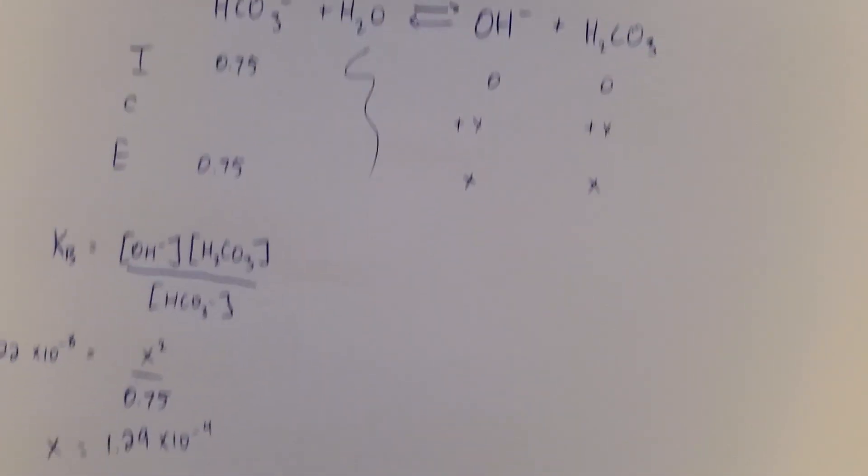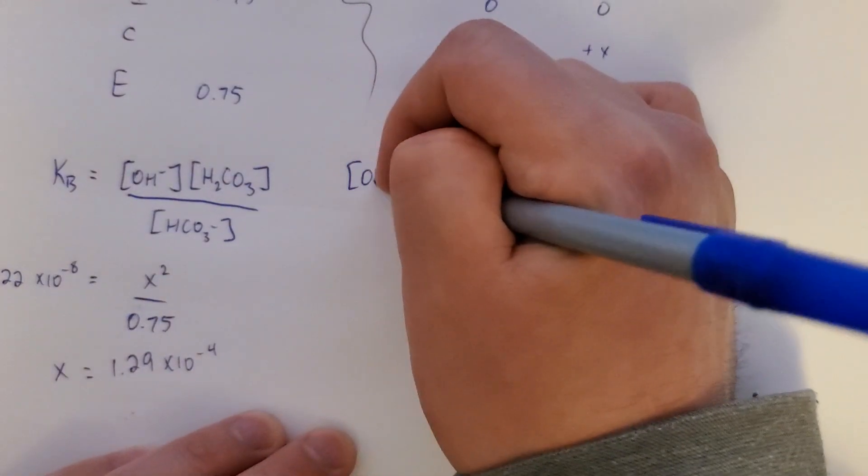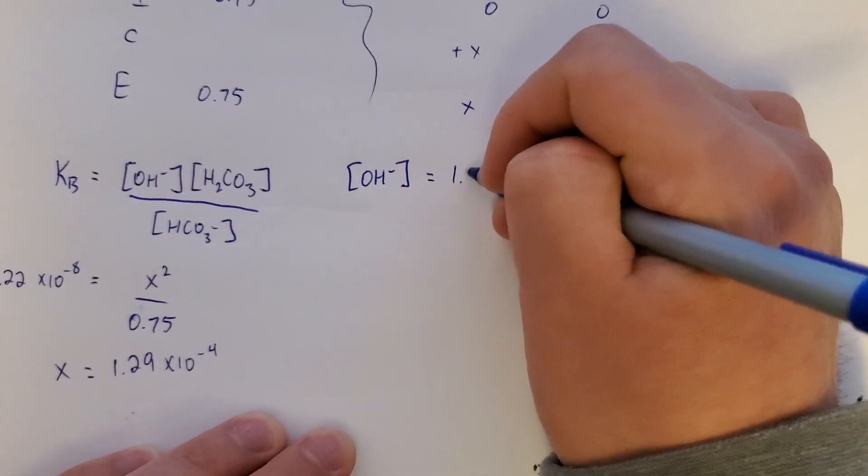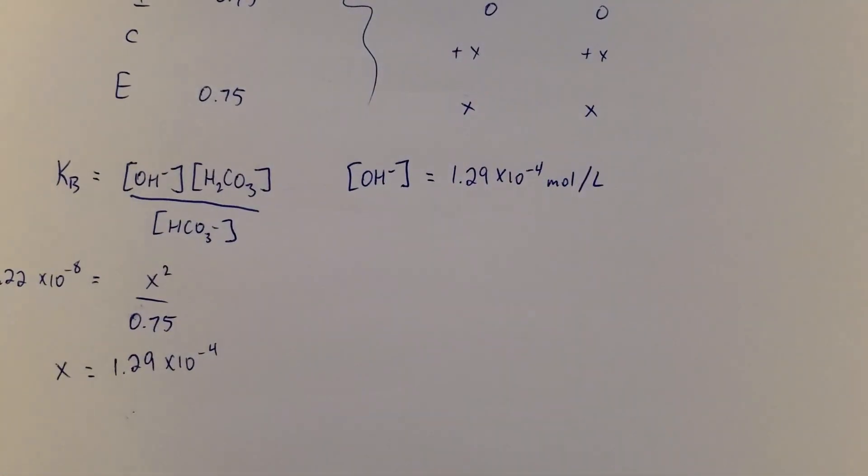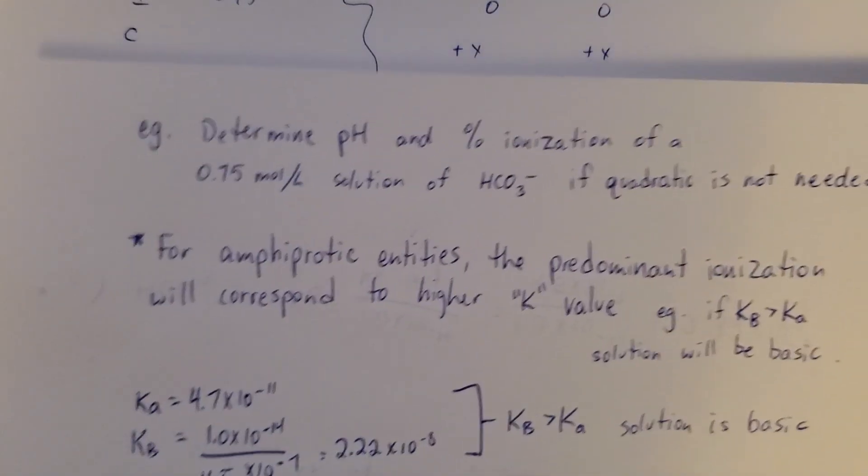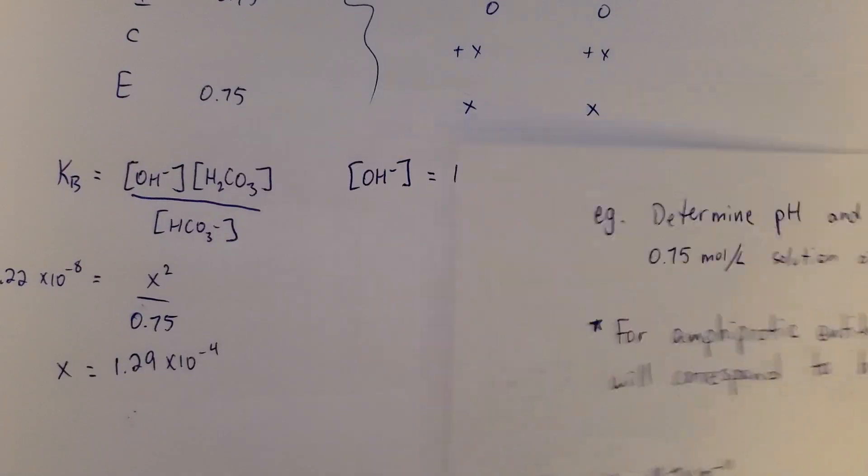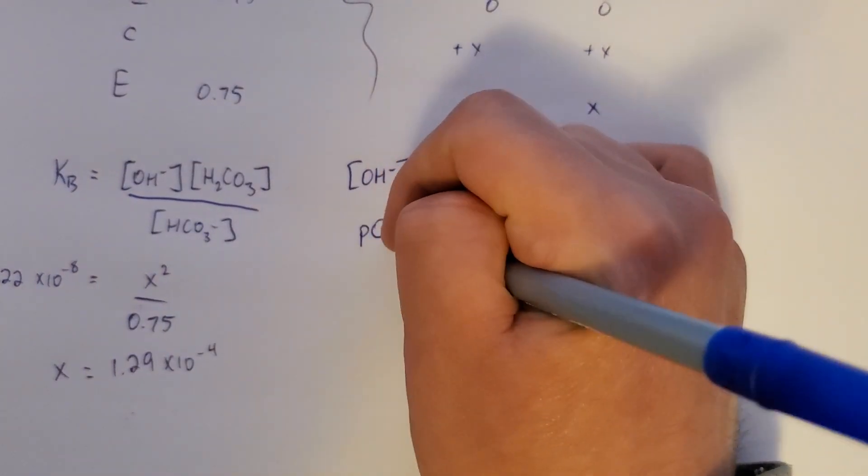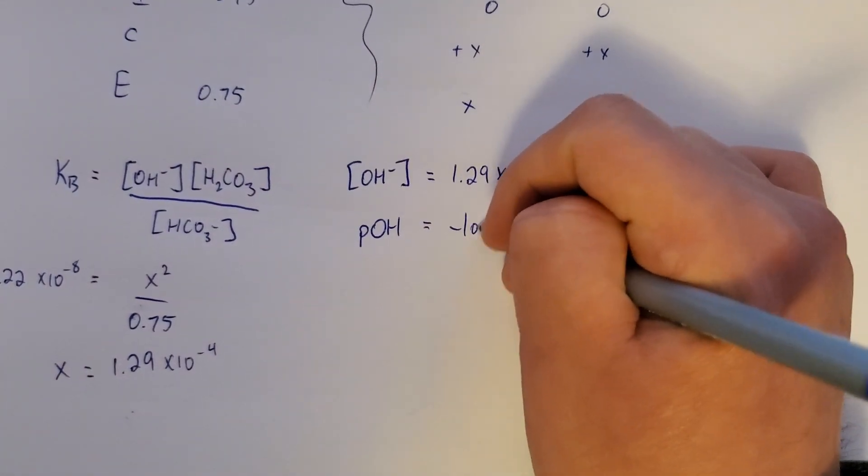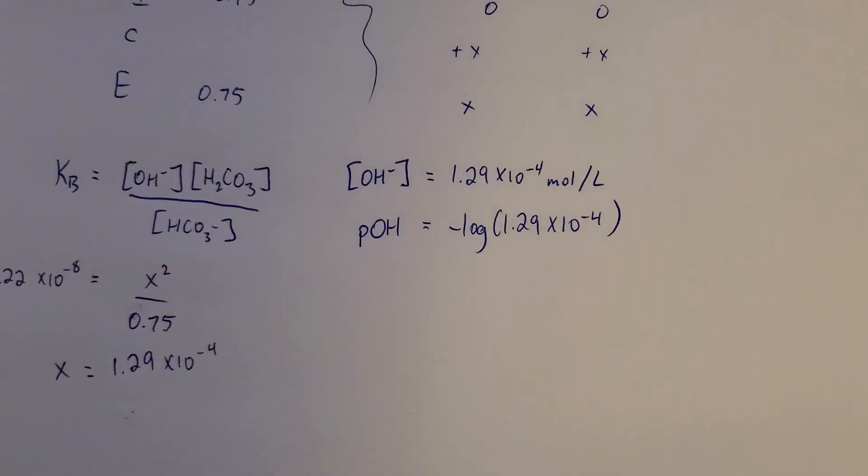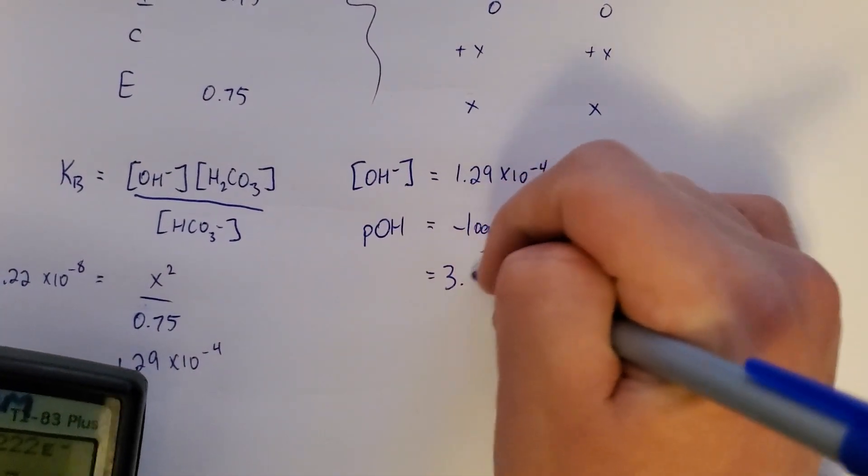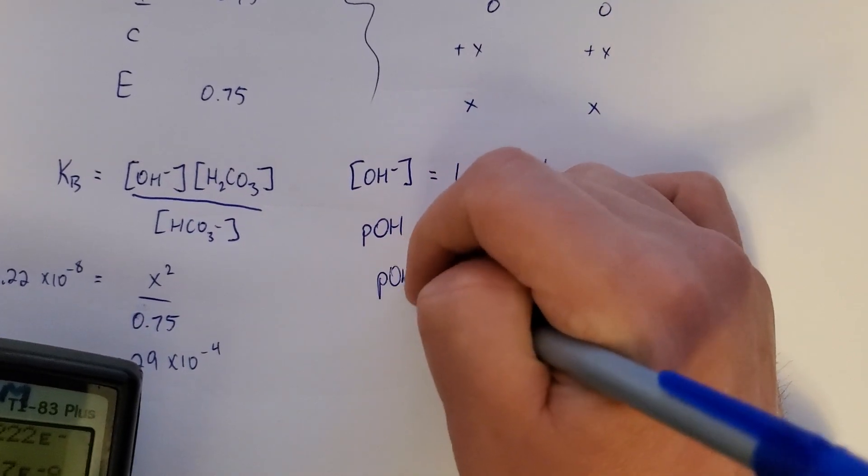All right, X is the hydroxide concentration. I want to remind us what we actually have to find here. We're finding pH and percent ionization. So maybe I'll find the pOH really quickly. Okay, I get 3.89.